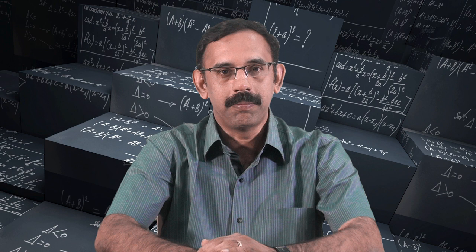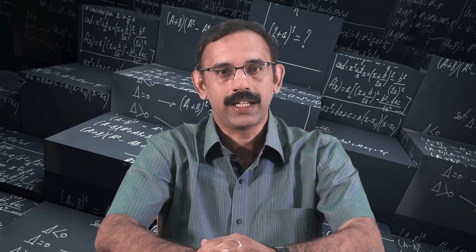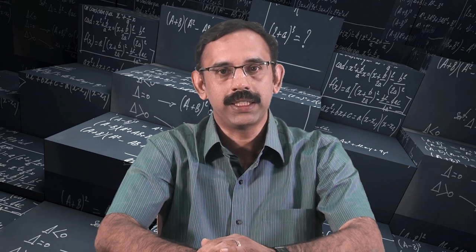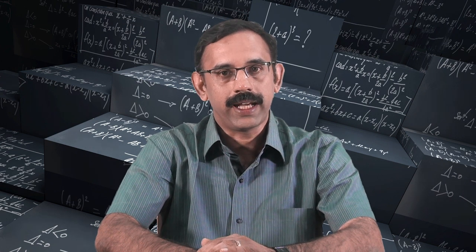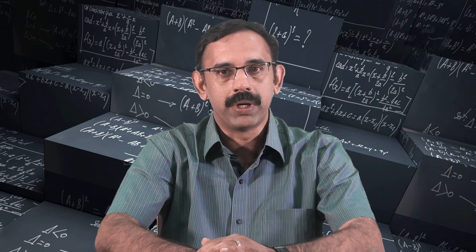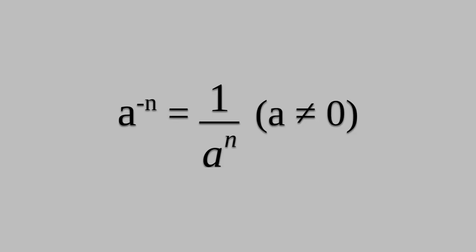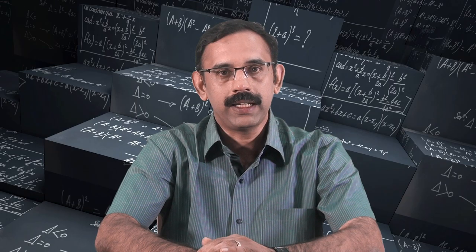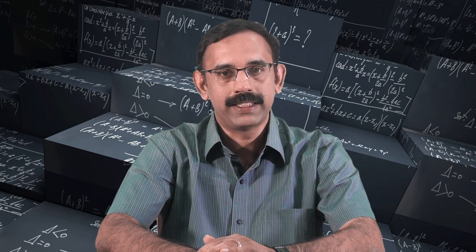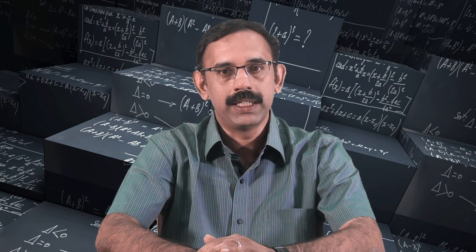Dear students, do you remember what we have learned in your last class about exponents? We learned that very small numbers can be expressed in standard form using negative exponents. We also learned that when a is a non-zero number and n is a natural number, a raised to minus n is 1 divided by a raised to n, and is called the multiplicative inverse of a raised to n. In today's class, we are going to learn more details about powers and exponents, including some of their properties.